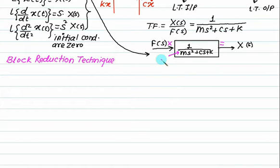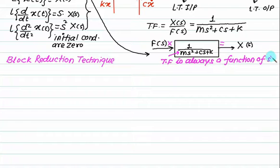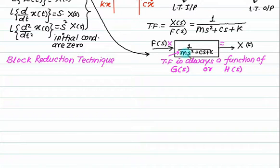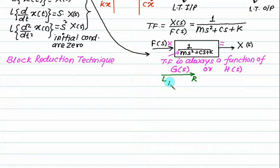The transfer function is always a function of S and is normally represented by the letter G(S) or H(S). The value is 1 upon m squared plus S plus K. G(S) and H(S) have the same value. Sometimes we use the letter G and sometimes we use the letter H. G is normally preferred if you are moving from left to right — that is called forward. The word 'transfer function' is not used; instead we use the word 'gain.' The name for left to right is forward.